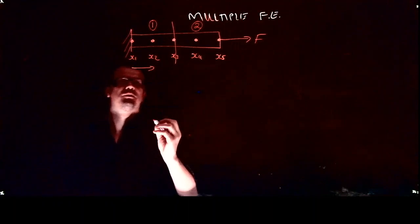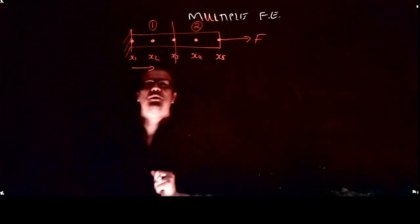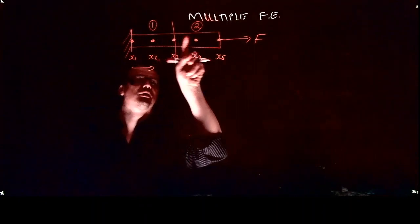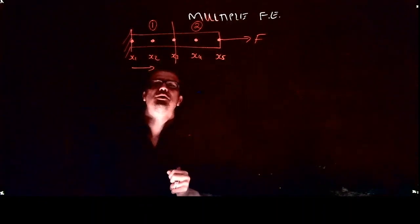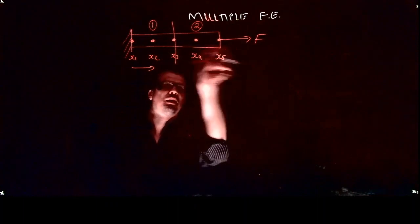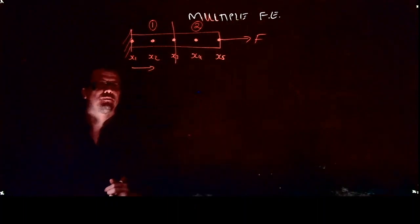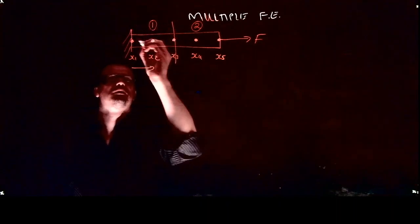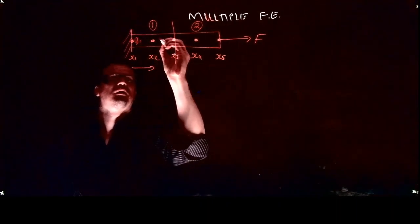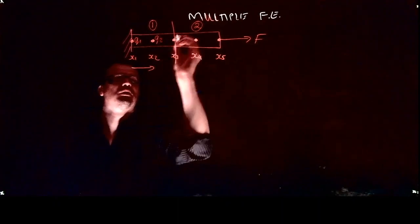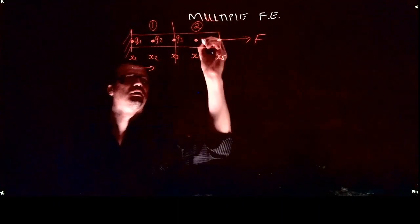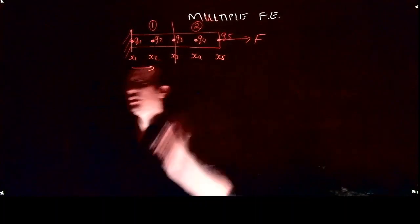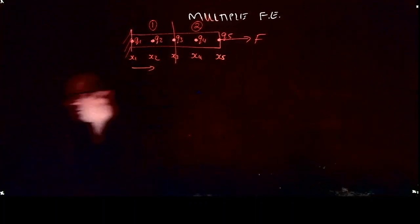Not just does it have its associated x value, it also has an associated unknown displacement. Remember, each node that we put down has an unknown displacement for these 1D finite element cases. This I'm going to call q1, this I'm going to call q2, q3, q4, q5. So there are all my unknowns.